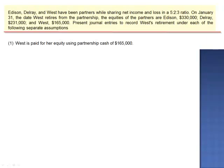Exercise 9. Edison, Del Rey, and West have been partners sharing net income and loss in a ratio of 5 to 2 to 3. On January 31st, the date West retires from the partnership, the equities of the partners are Edison $330,000, Del Rey $231,000, and West $165,000. Prepare journal entries to record West's retirement under each of the following separate assumptions.